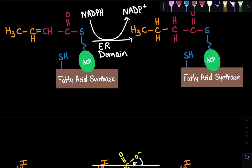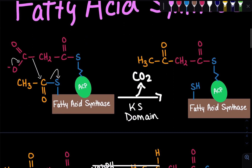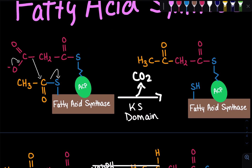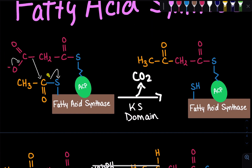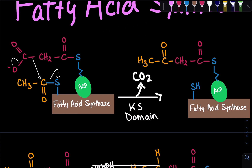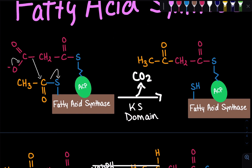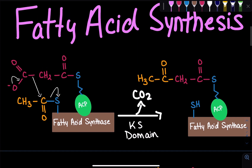Another important thing to note is that the malonyl and the acetyl come from the MAT domain — the malonyl-acetyl transferase domain — where the malonyl originally has a CoA. MAT removes that CoA, and then the malonyl binds to MAT first, then gets passed on to ACP. Same with acetyl-CoA: it binds to MAT, then gets passed to ACP. MAT is essentially the domain that picks up new carbons and passes them on to ACP. This cycle repeats, and in the end we get our fatty acid.